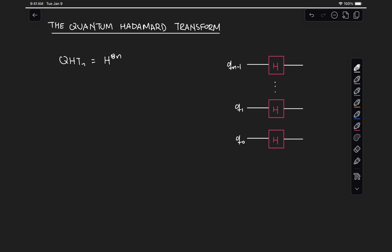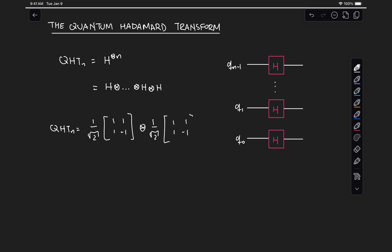To construct a unitary matrix that represents the Quantum Hadamard Transform, all we need to do is perform the Kronecker product of the individual matrices for each of the Hadamard gates. So, for example, in the case of two qubits, what we have is (1/√2)[1, 1; 1, -1] Kronecker product with (1/√2)[1, 1; 1, -1]. If we perform that operation, we get 1/√2 squared times a matrix which always consists of a series of alternating 1 and minus 1 values.